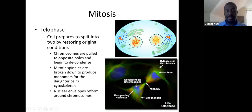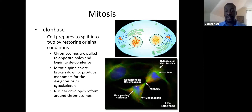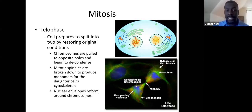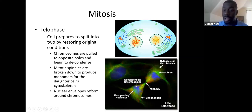The last phase of mitosis is telophase. Now that chromosomes have been pulled to opposite ends of the cell, we begin to restore original conditions. The chromosomes start to decondense — they were previously condensed into thick visible chromosomes, and now they begin to decondense during this phase.